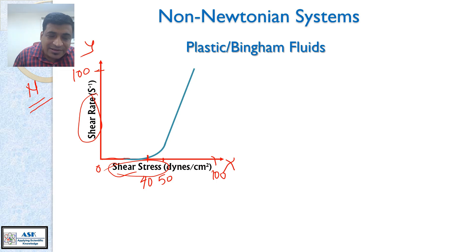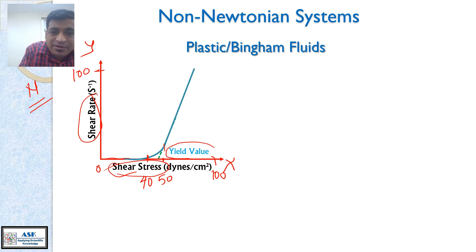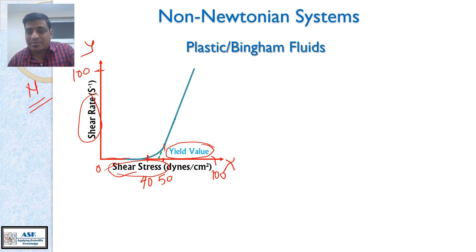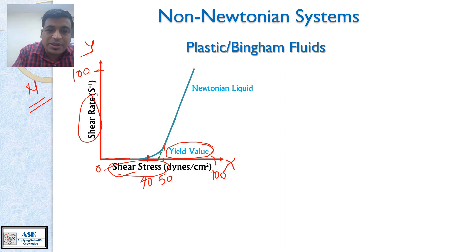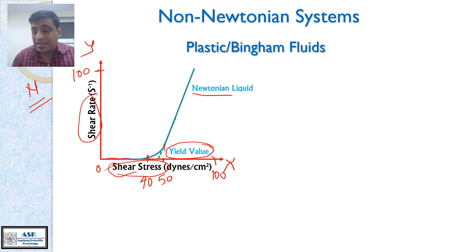There is one certain critical point here, and that critical point is called the yield value. You have to apply a certain shear stress, and once you apply that shear stress, these liquids follow the Newtonian relationship. That yield stress or yield value is very characteristic for plastic fluids — none of the other fluids have yield values except plastic fluids. Once we apply this yield value, these liquids behave like Newtonian liquids.